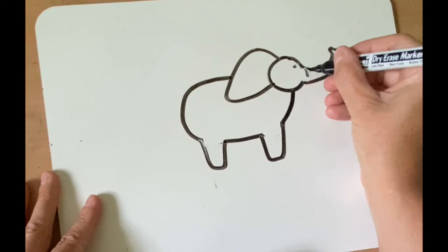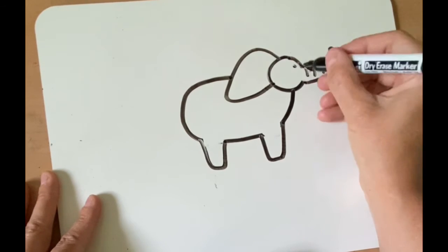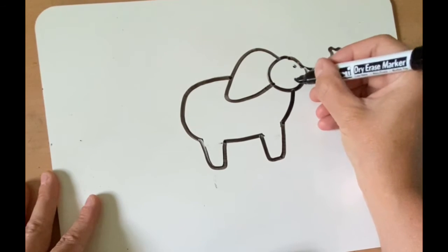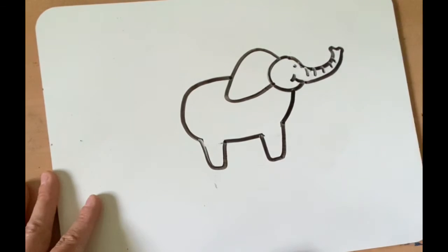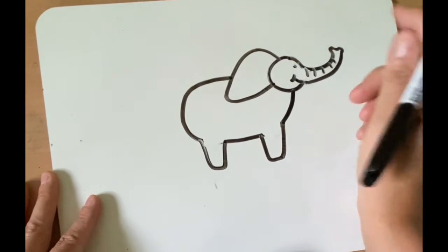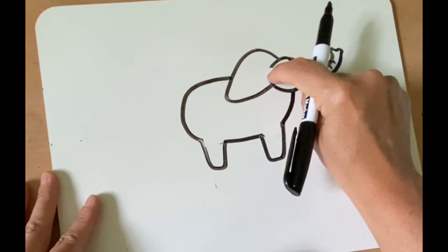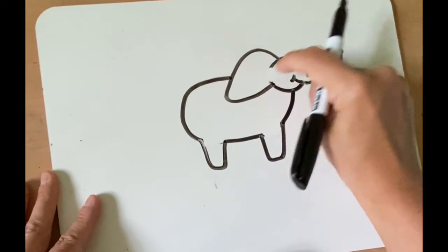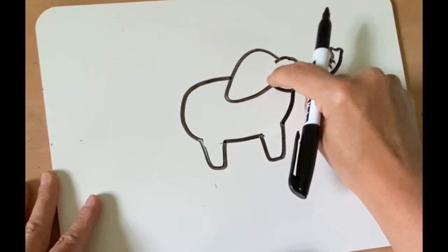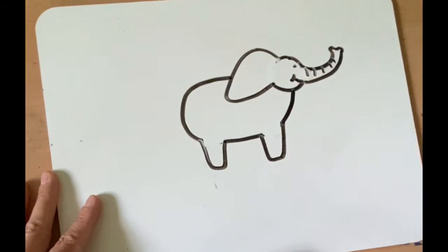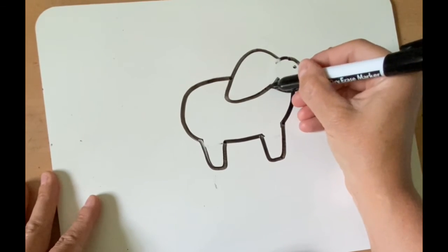Let's put some lines in the trunk. Give a little smiley face there. You could also erase a little bit here. Just bring the ear up a little bit there.